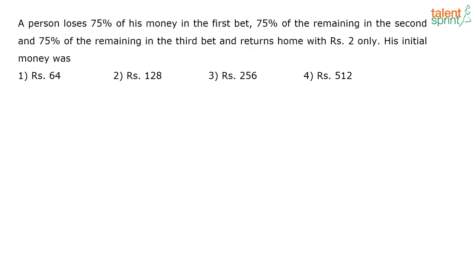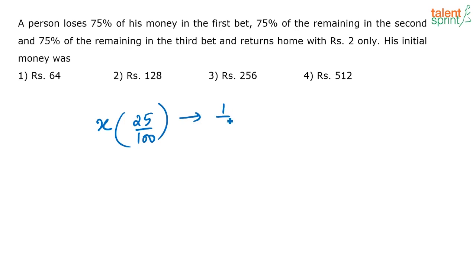I am going to assume that he had X money with him. Out of this, he is losing 75% of the money in the first bet, so how much is remaining with him? 25% of that — correct. What is remaining with him is 25 by 100 of X. What is 25 by 100 of X? It is nothing but 1 by 4 X.